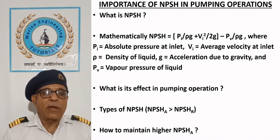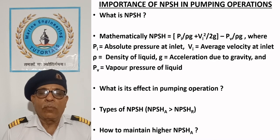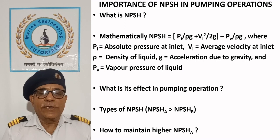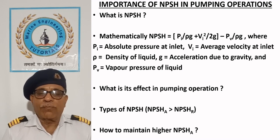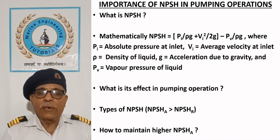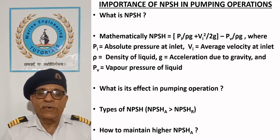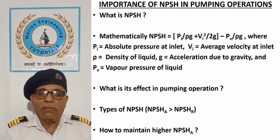How to maintain higher Net Positive Suction Head Available: As discussed in lecture 1, some head is lost due to major and minor losses on the suction side. To reduce these losses or to increase NPSHA, the pump should be placed closer to the liquid to reduce suction pipe length. The suction pipe or pump is usually larger in diameter than the delivery pipe to reduce head loss. Straight pipes with minimum fittings such as valves, bends, tees, and filters should be considered. A gate or butterfly valve should be used, which offers minimum resistance with full flow characteristics.